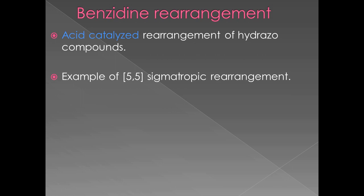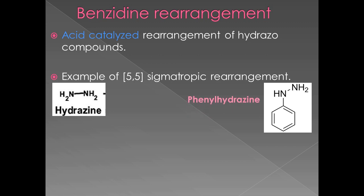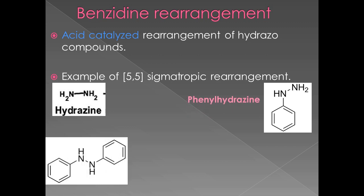As of now, let us look at the starting material of this rearrangement. This is hydrazine. In this compound, one hydrogen of hydrazine is replaced by a phenyl group, therefore this is phenylhydrazine. Here, two hydrogens are replaced by phenyl groups, therefore this is 1,2-diphenylhydrazine.